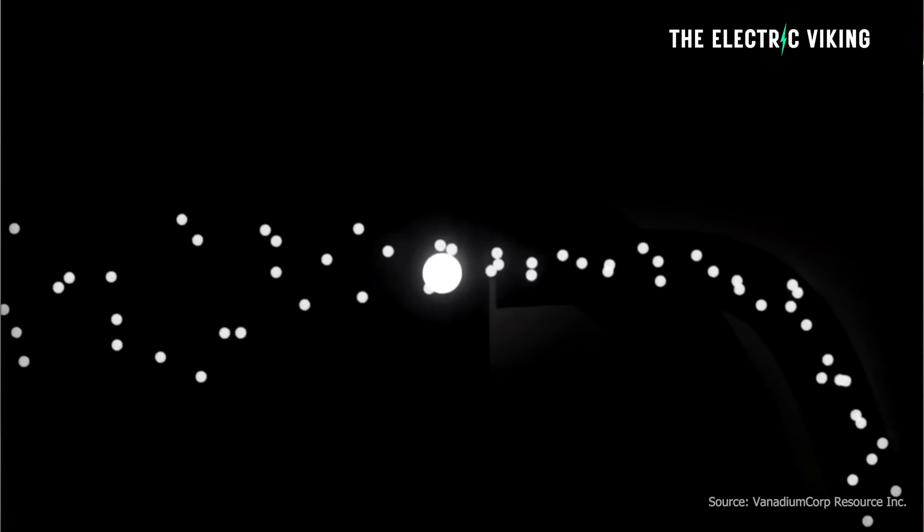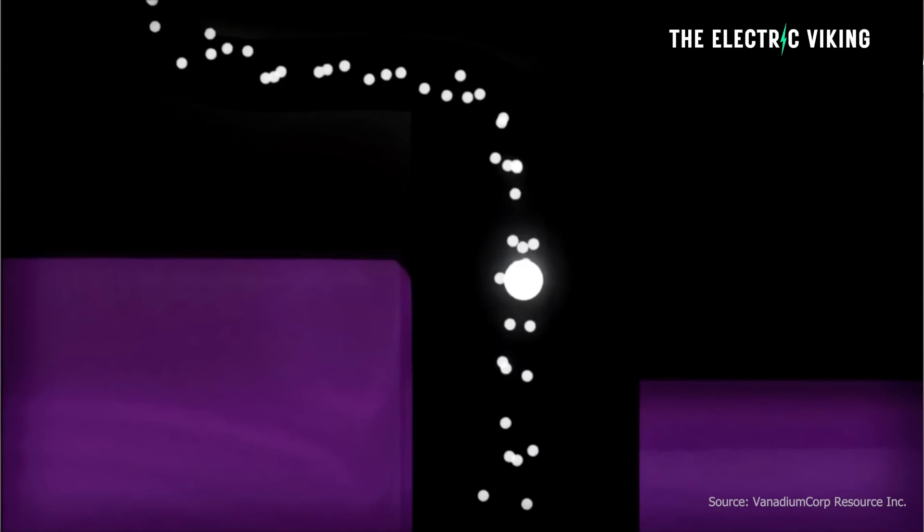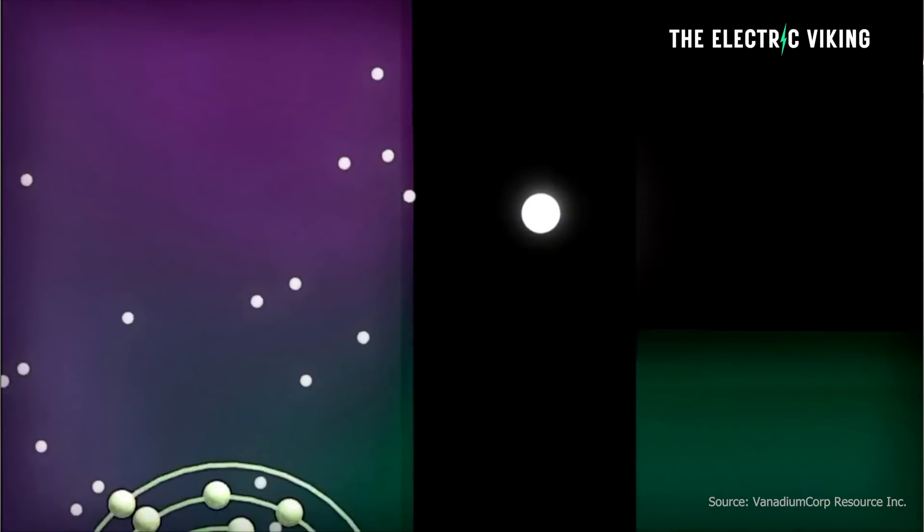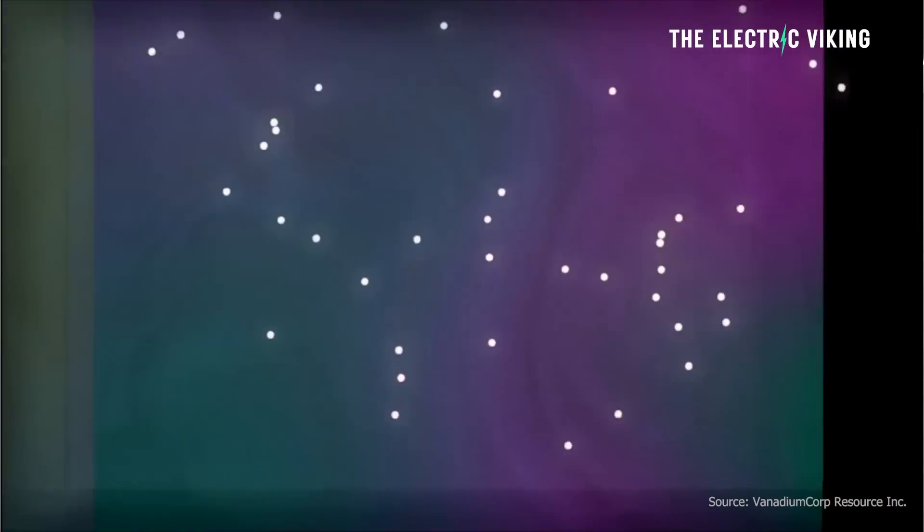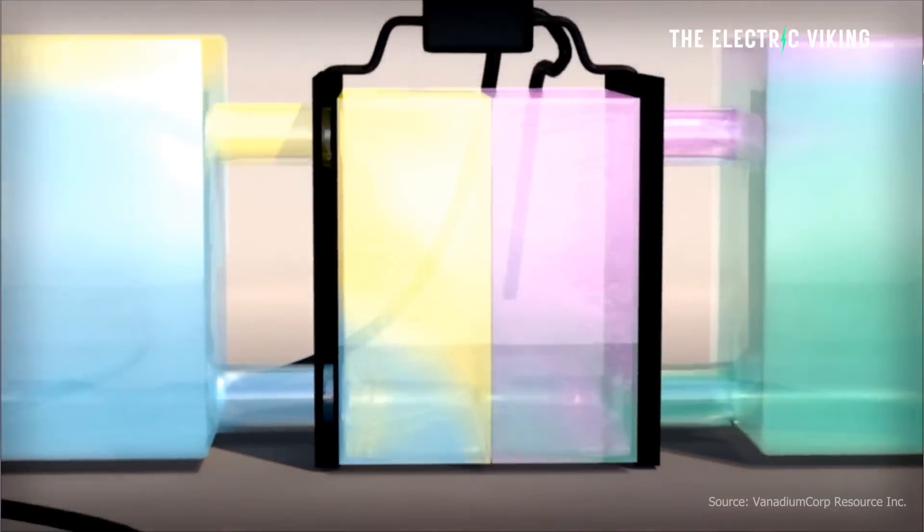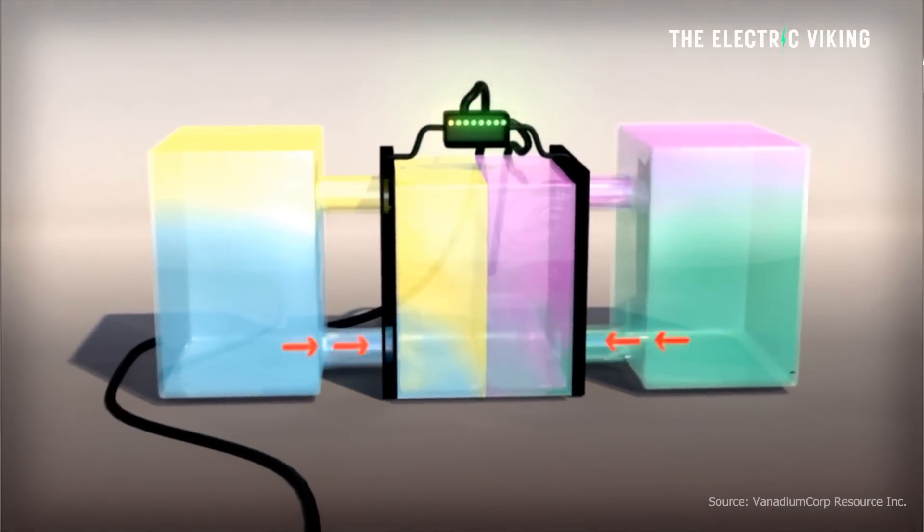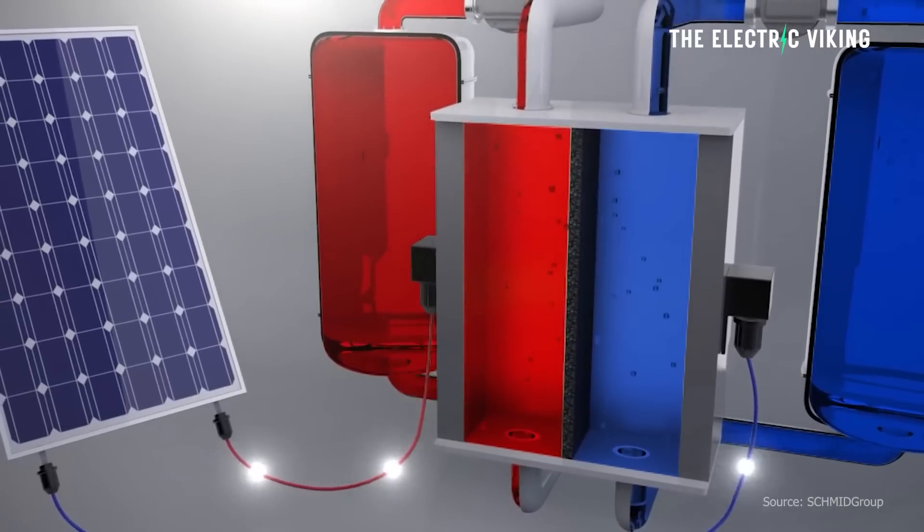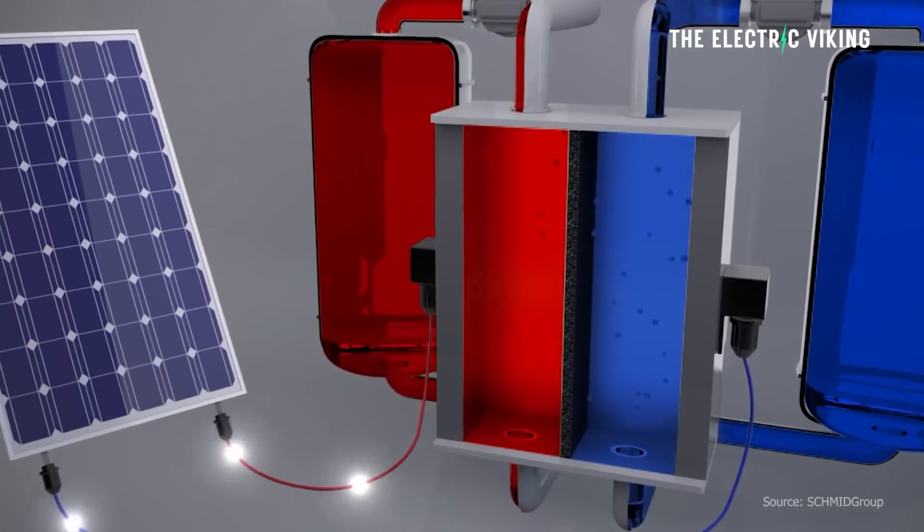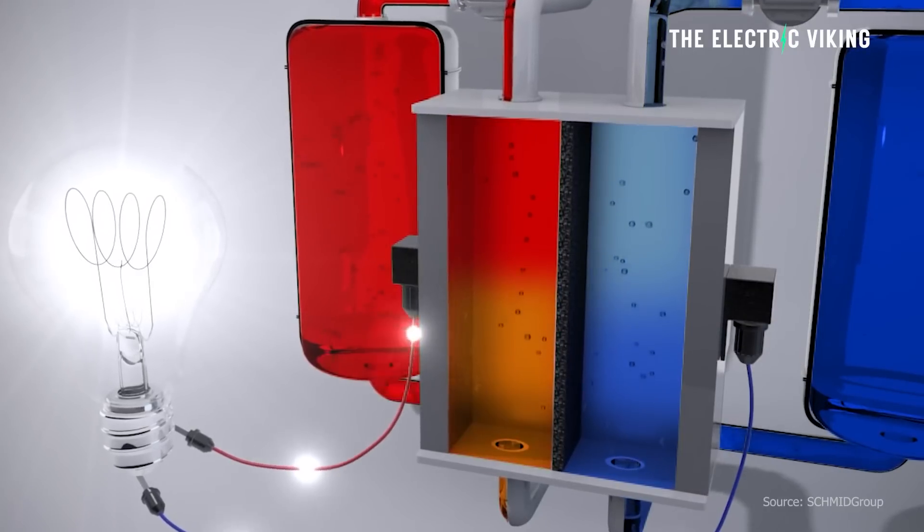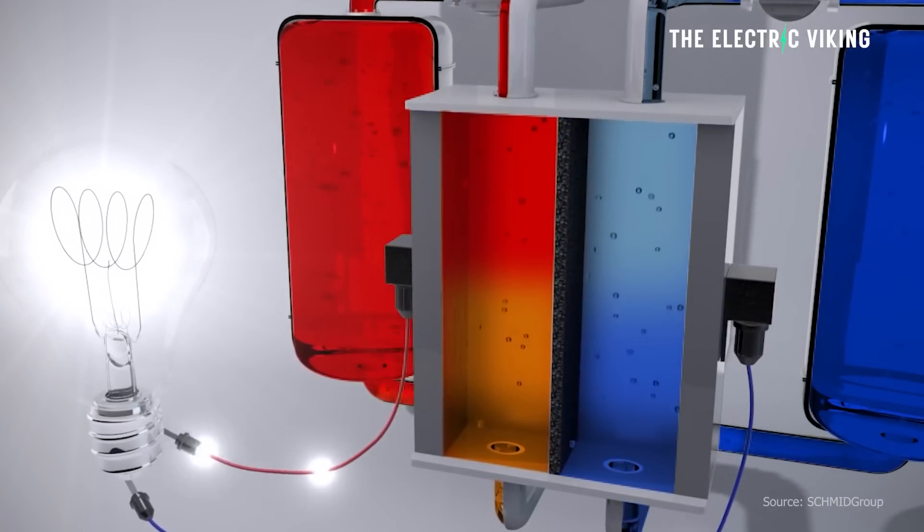A flow battery is a type of rechargeable battery that stores and releases energy by utilizing chemical reactions between two liquid electrolytes. Unlike conventional batteries, where the energy is stored in solid electrodes, flow batteries store energy in external tanks as liquid electrolytes. During charging or discharging, the electrolytes flow through an electrochemical cell where the chemical reactions take place, generating or consuming electrical energy.